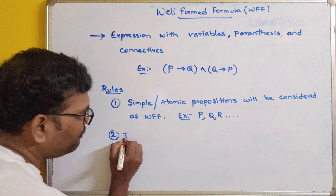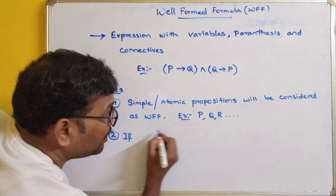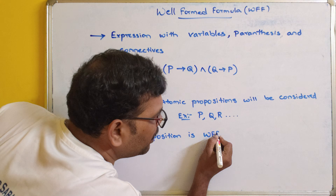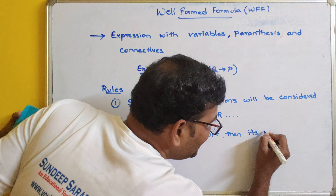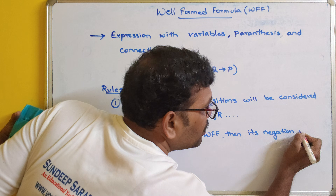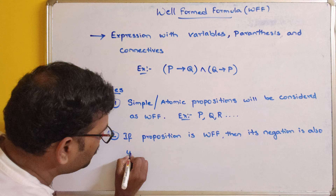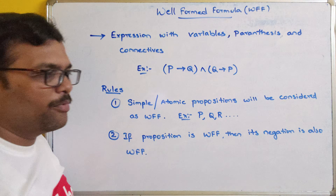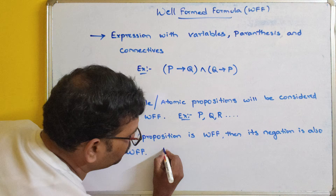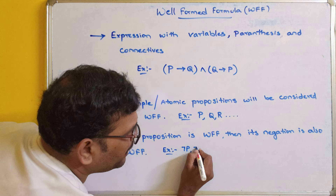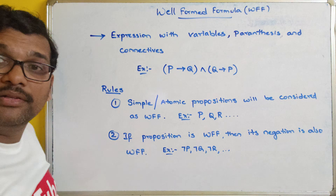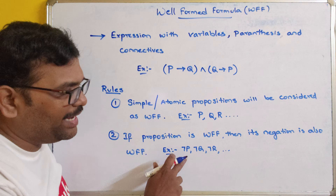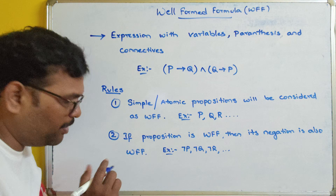The second rule: if a proposition is a well-formed formula, its negation will also be a well-formed formula. So if the simple or atomic propositions are well-formed formulas, then their negations will also be well-formed formulas. For example, negation P, negation Q, negation R, and so on. In the first rule we have seen P, Q, R are all well-formed formulas, so automatically negation P, negation Q, negation R will also be well-formed formulas.